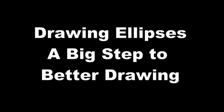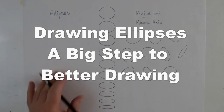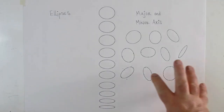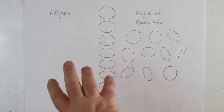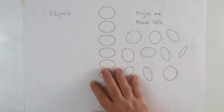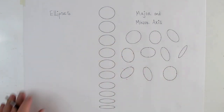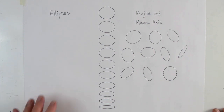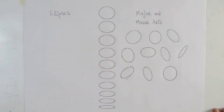Today we're going to talk more about ellipses. In a previous video we talked about how ellipses are circles in perspective, and that ellipses have two different axes that meet at 90 degrees called the major and minor axis.